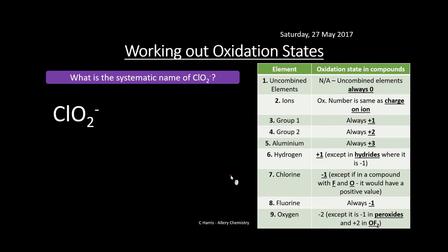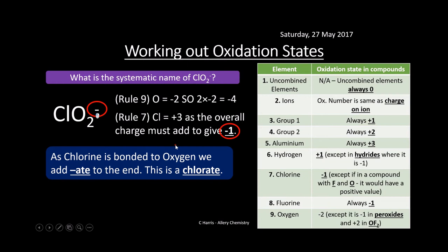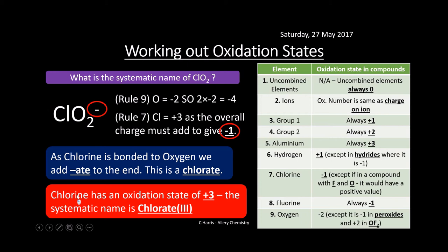You're also asked to give systematic names for ions. For example, ClO₂⁻: oxygen is −2 with two of them (−4 total), so chlorine must be +3 since the overall charge is −1. Because chlorine is bonded to oxygen we use the 'ate' suffix, so this is called chlorate. Adding the oxidation state gives the systematic name: chlorate(III).